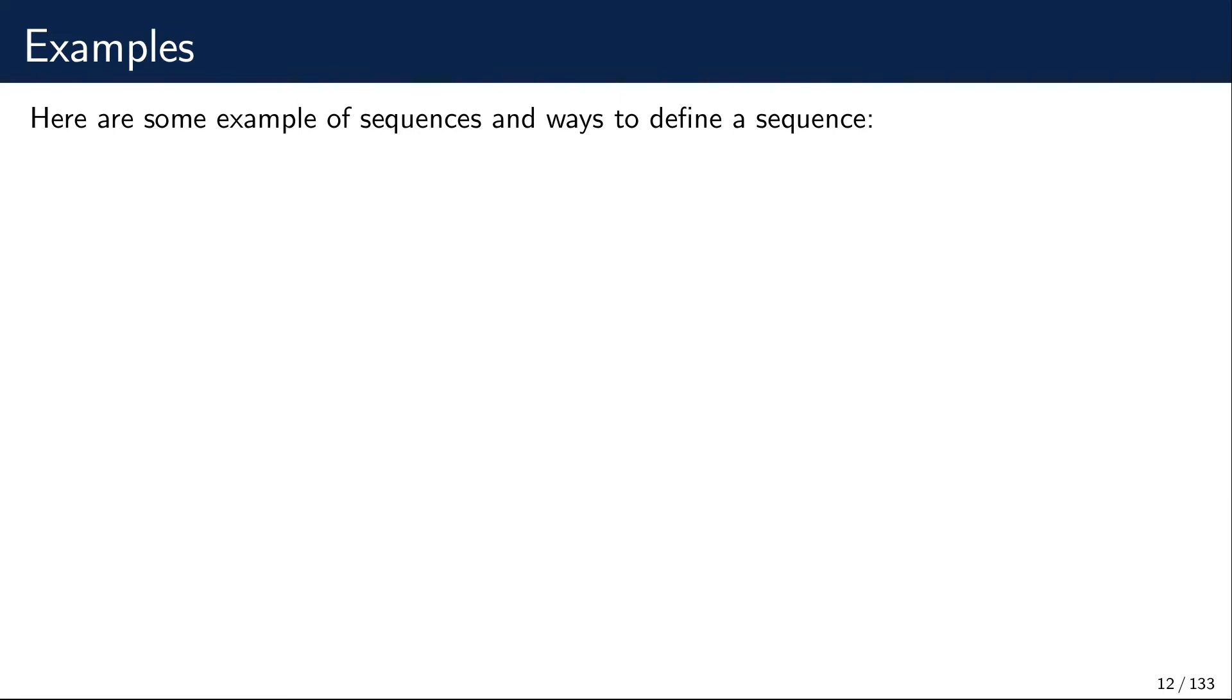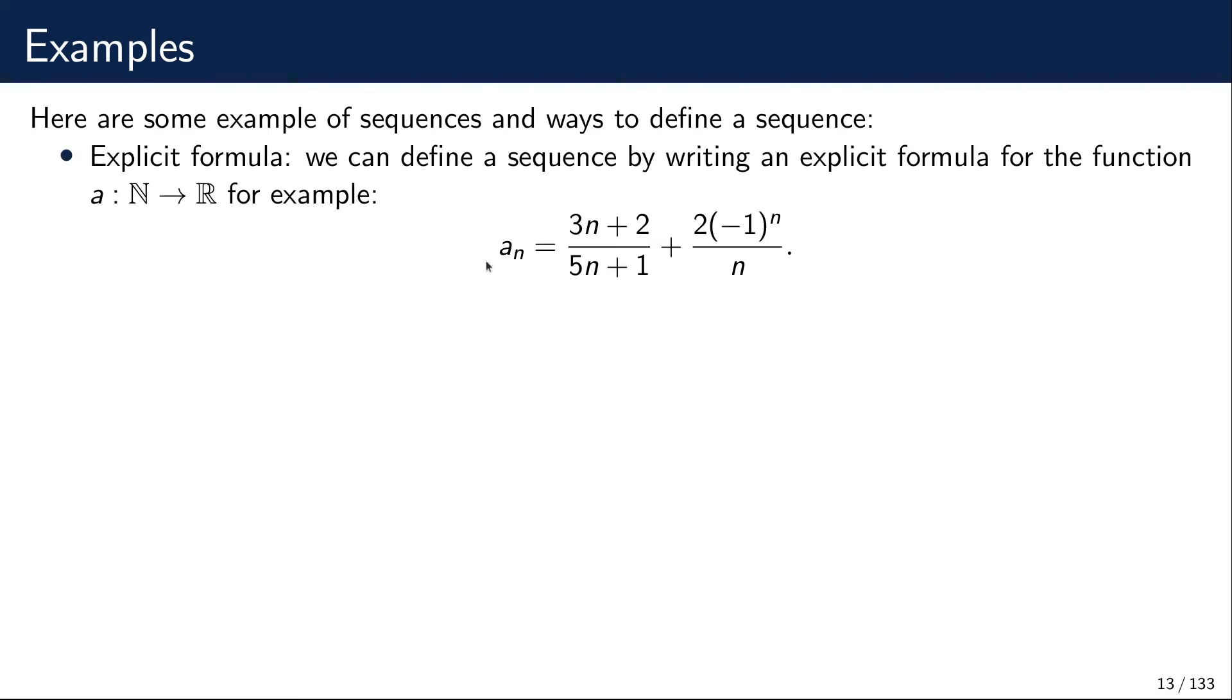Here are some ways in which we can define a sequence. We need to define this function. One way is to give an explicit formula. Remember that a is a function, so here is how we specify it. We give for each n how we compute the value of the function for this n. This is explicit formula. That's a way of specifying a sequence and this is the direct and most common way to specify a sequence.